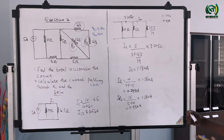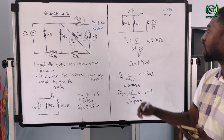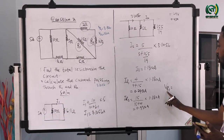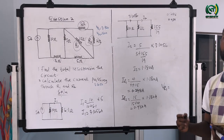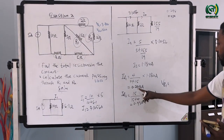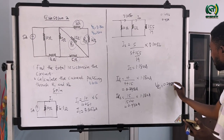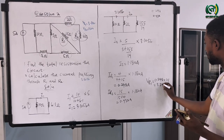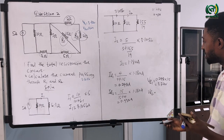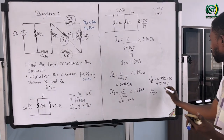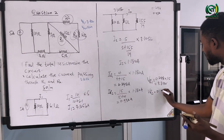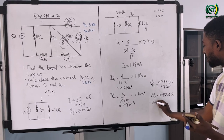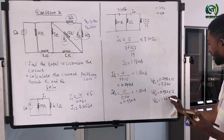The last part is to calculate the voltage drop across resistors R1 and R2. Voltage is equal to current times resistance. VR1 equals the current through R1, which is 0.248, multiplied by the resistor value of 15 ohms, giving 3.72 volts. Then VR2 — the voltage drop across R2 — equals the current through R2, which is 0.932, multiplied by 2 ohms, giving VR2 equal to 1.864 volts.